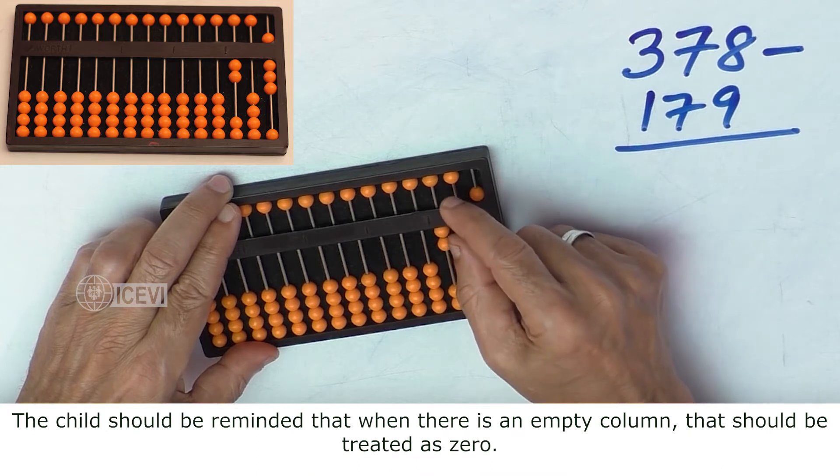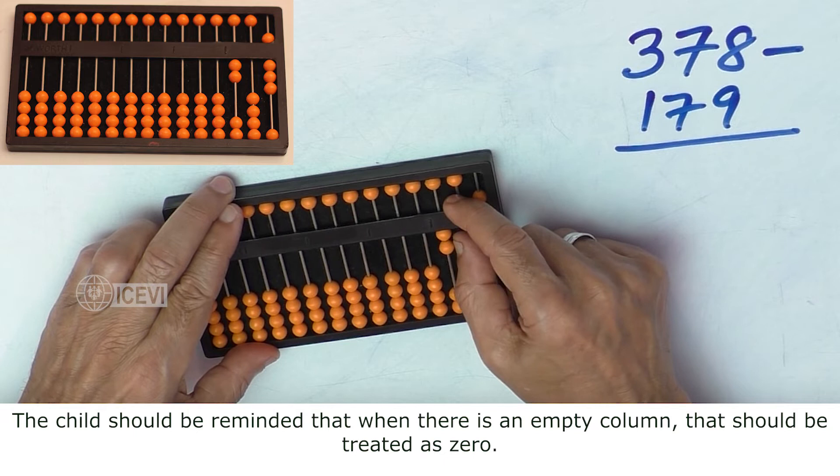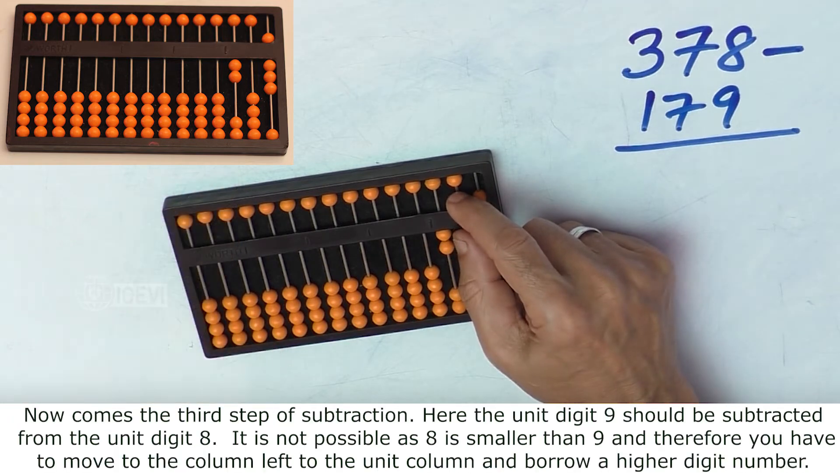The child should be reminded that when there is an empty column, that should be treated as 0.